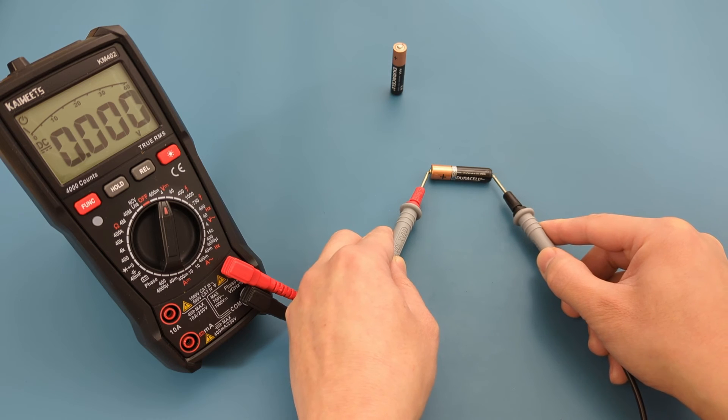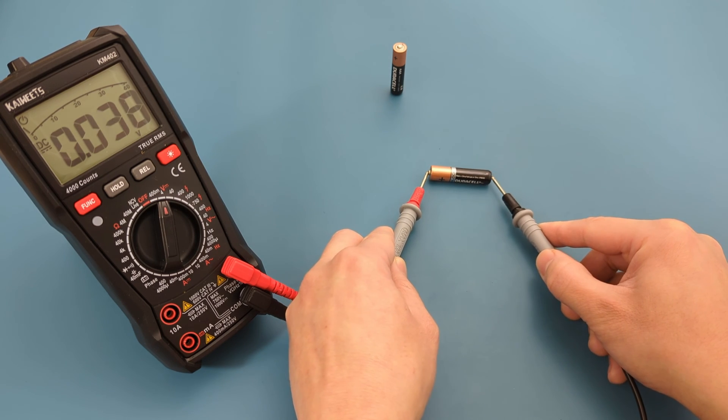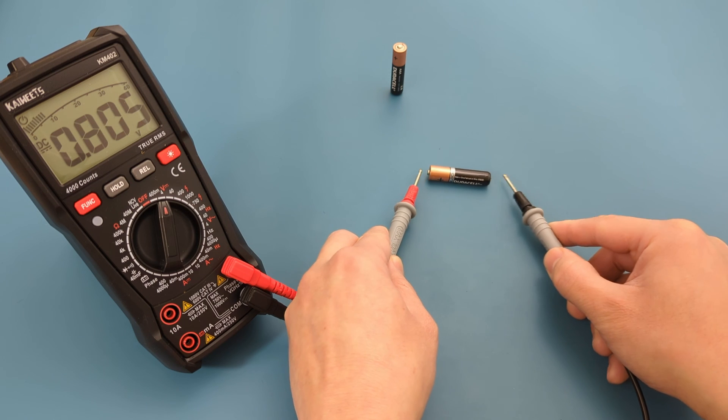I hope this video has demonstrated how to test a triple A battery without a multimeter. Keep in mind that the drop test is not an accurate method. For a precise measurement of the remaining charge, it's best to use a multimeter.